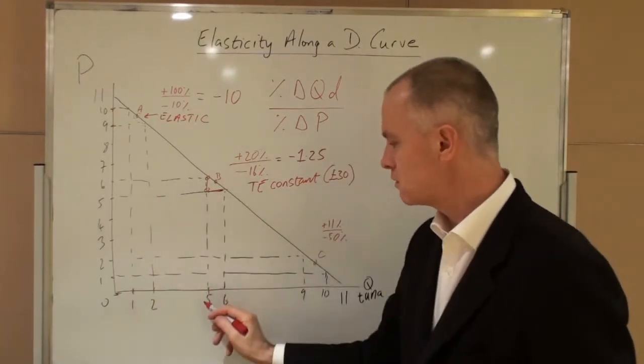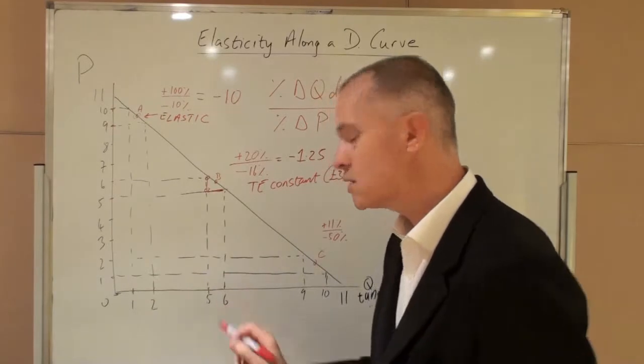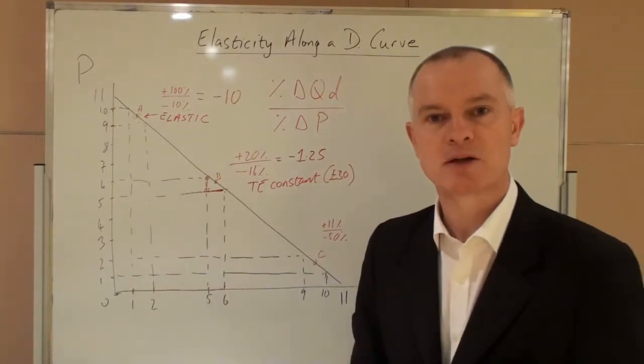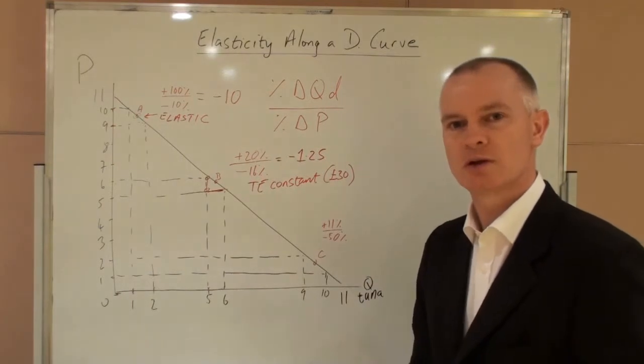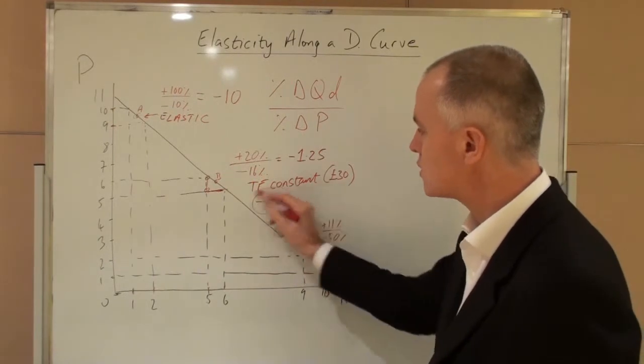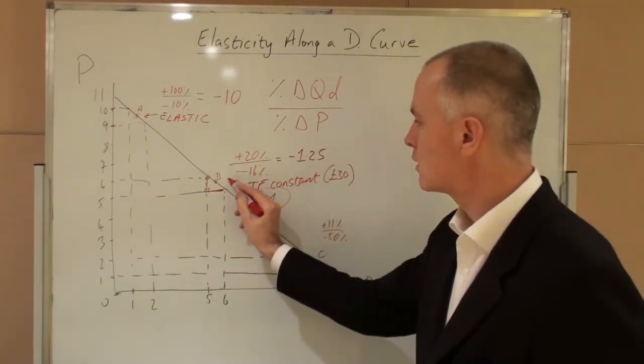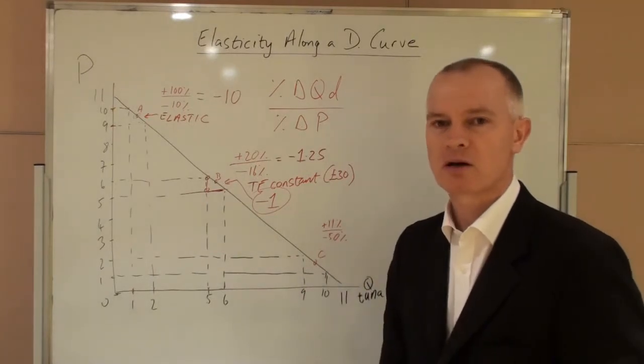When the price is six, five units are bought. Thirty pounds. When the price is five, six units are bought. But total expenditure has remained constant. If total expenditure remains constant when we change the price, this defines elasticity as minus one or unit. And it is unit elastic in the very middle of the demand curve.